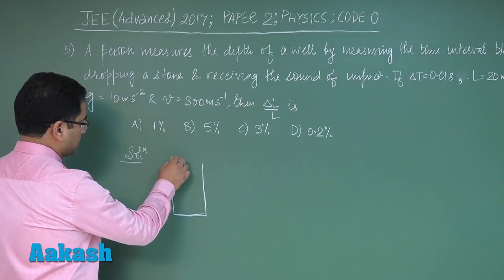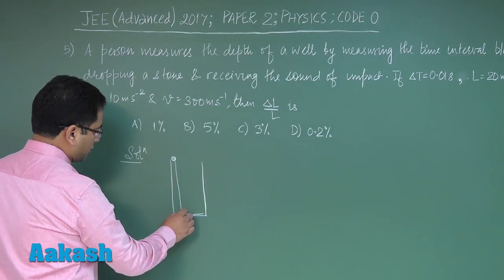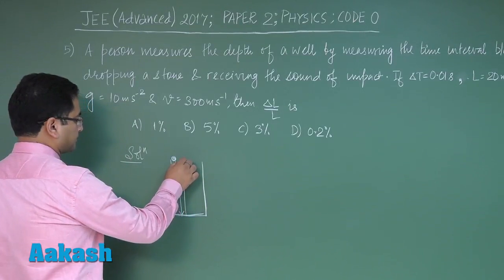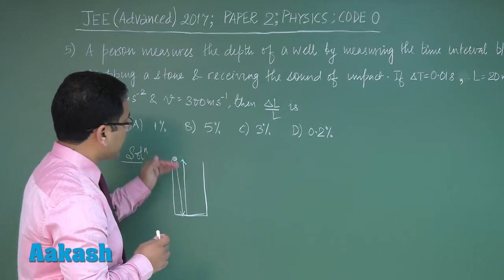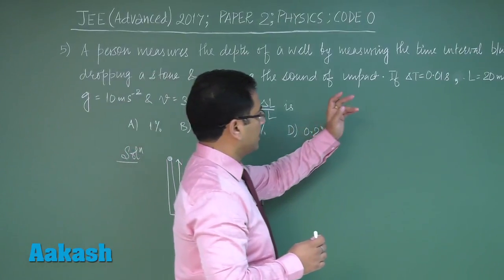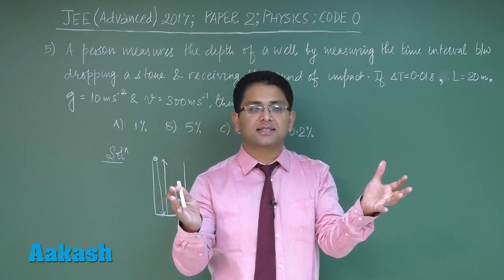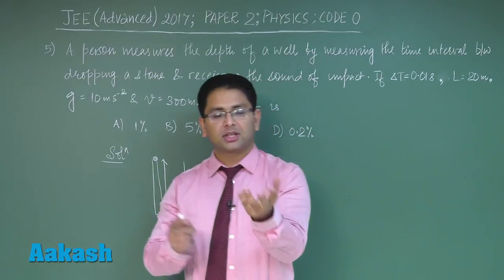Someone drops a stone, the stone takes a certain time to reach here, produces the splash, and that sound would travel up. The time T, or in that time measurement, the error made is 0.01 second, which can happen due to a variety of reasons like the stopwatch least count or the reaction time. Let's not get into that - the total error is given.